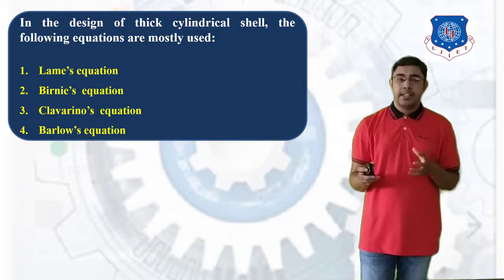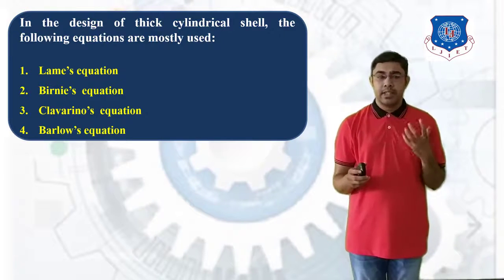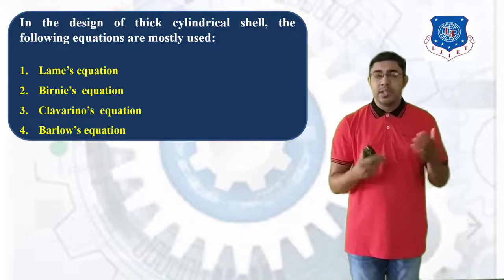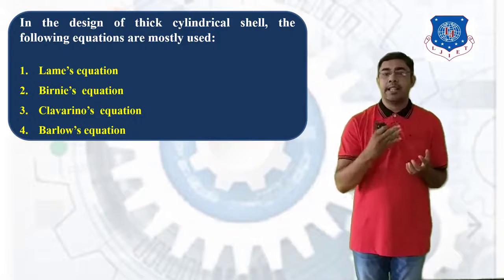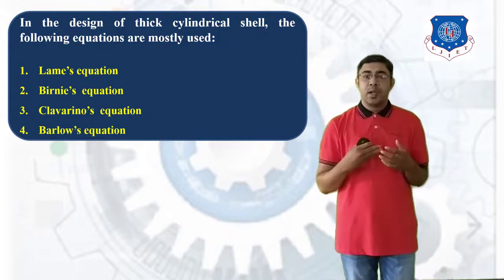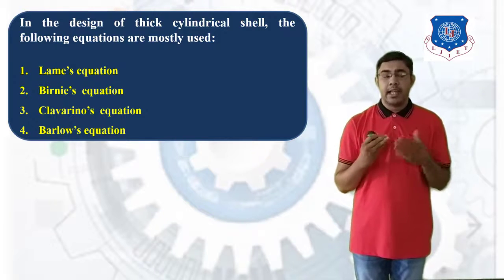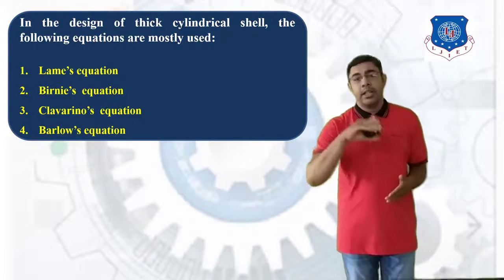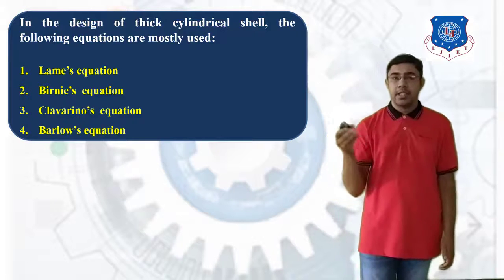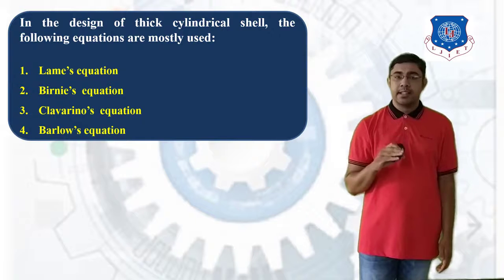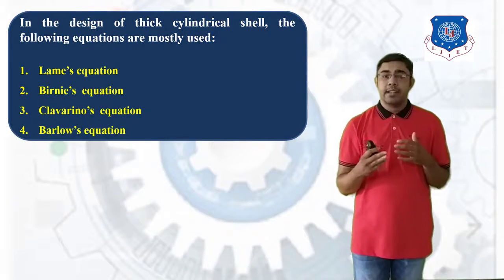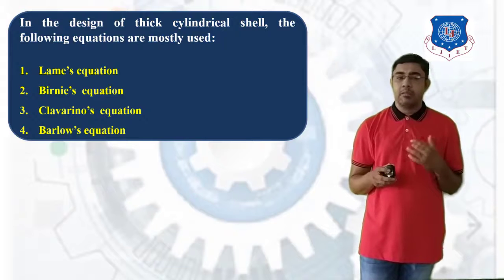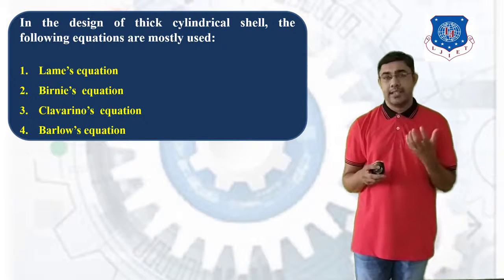In thick cylindrical cells, we follow four equations: Lame's equations, Birnie's equations, Clavarino's equations, and Barlow's equations. These four equations are used to design thick cylindrical cells according to the material conditions and the end connections of the pressure vessels.